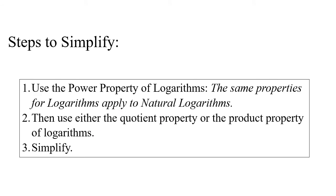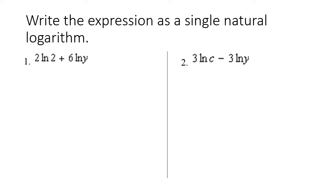We're going to start with simplifying. The steps to simplify: one, use the power property of logarithms — the same properties for logs apply to natural log, so we'll use property number five. Then two, use either the quotient property or the product property of logarithms — property number four or number three. And then three, simplify using all the algebra skills we have.